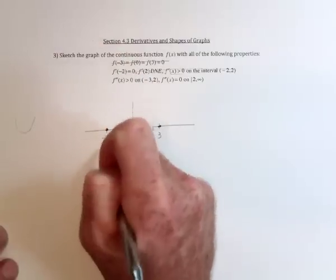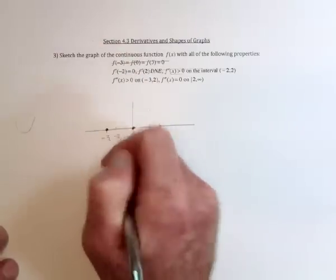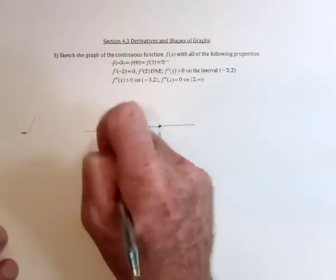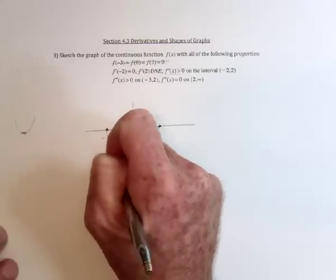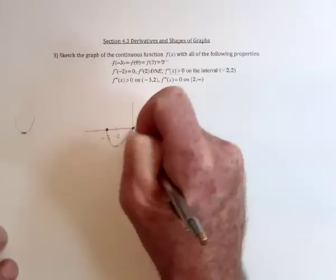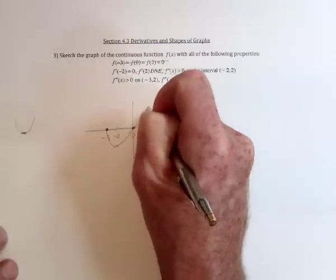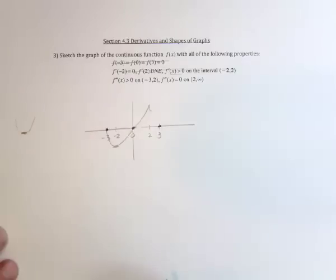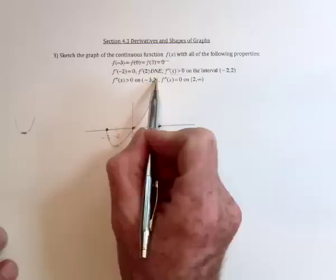So from negative 3, I'm going to need to have it bottom out right here and then make a U shape. So I'm putting this at negative 2. I also need it to go through 0. And then I could have my cusp thing. Great, done with that part.